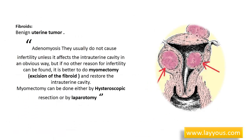Fibroids are a benign uterine tumor that might cause irregularities in the intrauterine cavity. They usually do not cause infertility unless they affect the intrauterine cavity in an obvious way. But if no other reason for infertility can be found, it is better to do myomectomy — excision of the fibroid — to restore the intrauterine cavity. Myomectomy can be done either by hysteroscopic resection or by laparotomy, where an abdominal incision is made to access the abdominal cavity and removal of the fibroid is performed.